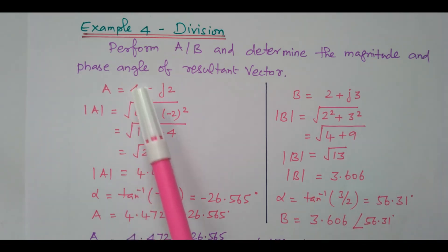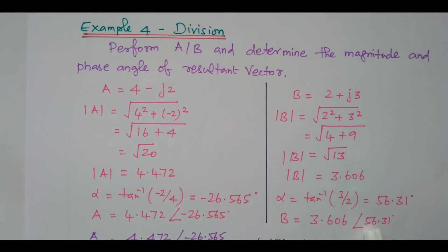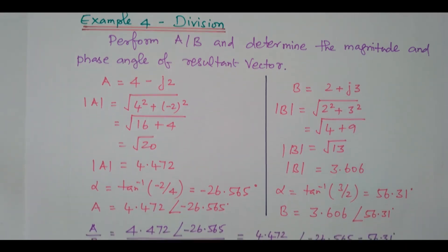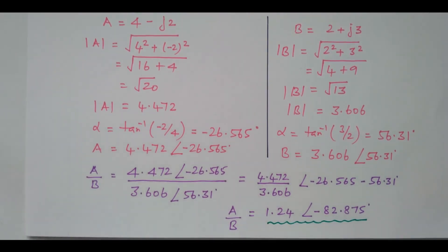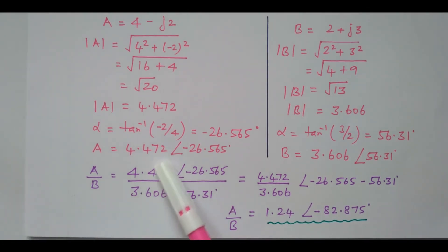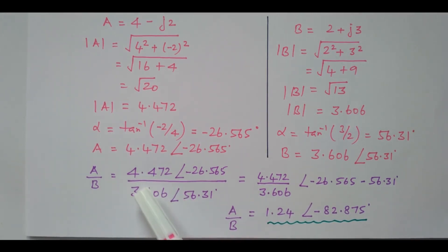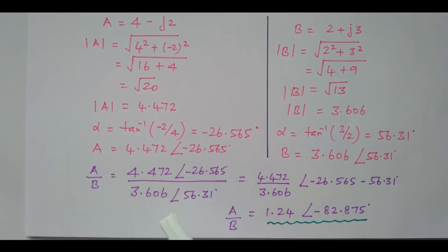Now it is represented in polar form as 3.606 with an angle of 56.31. The rectangular form of A and B is now converted into polar form of A and B. Now we will go for the division A divided by B. How will you divide? You have to divide the two magnitudes. For division, the two magnitudes are divided. What about the angle? The angle should be subtracted. In the previous case, the angles were added together; now the angle should be subtracted.